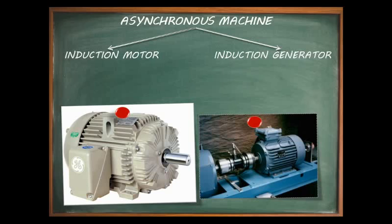If an induction motor, while connected to constant voltage and frequency mains, is mechanically coupled to a prime mover and driven at a speed higher than synchronous speed, the rotor overtakes the rotating magnetic field and the rotor conductors cut the magnetic flux in the reverse direction. The power of the machine then becomes negative, the machine starts supplying power to the supply mains rather than taking power from it, and hence acts as a generator.